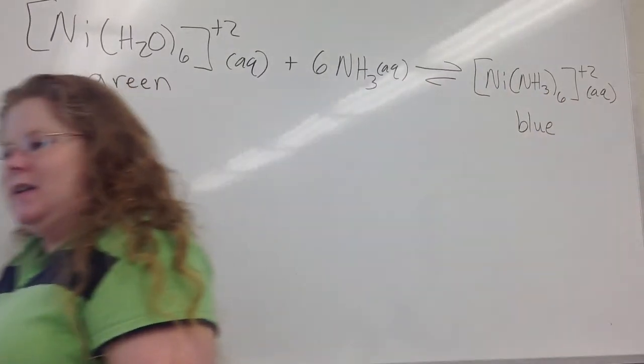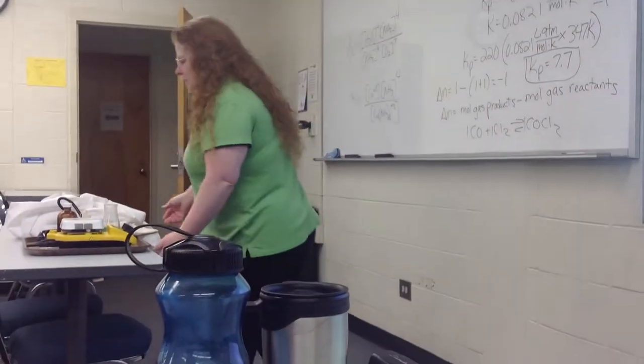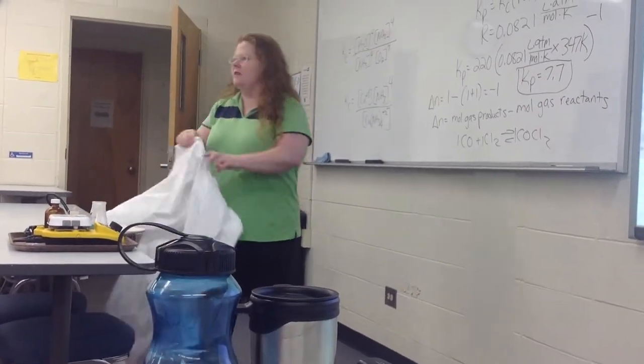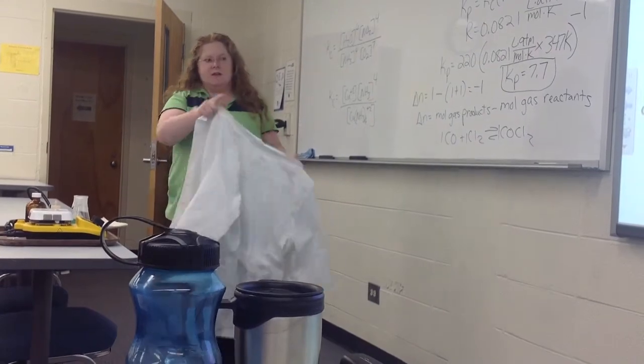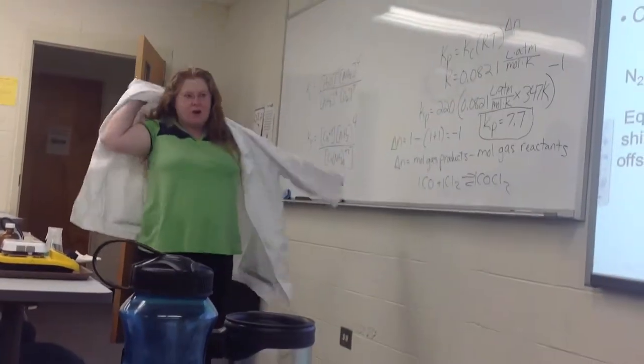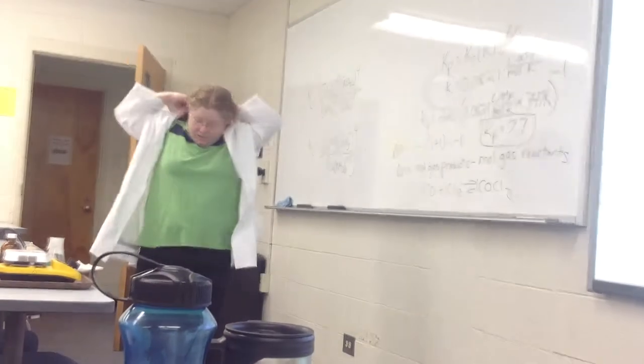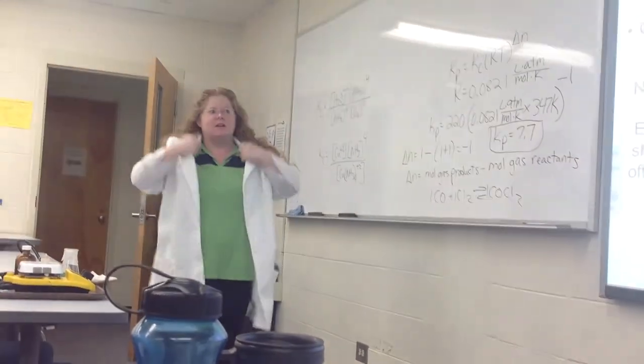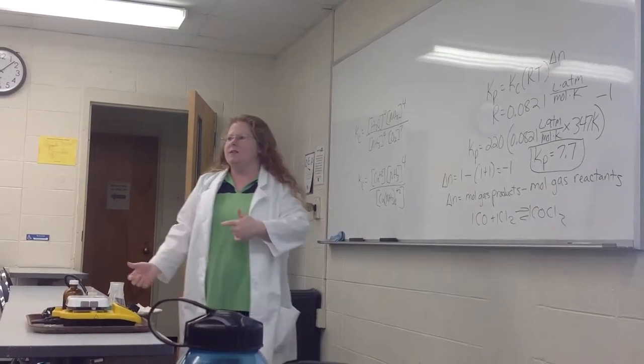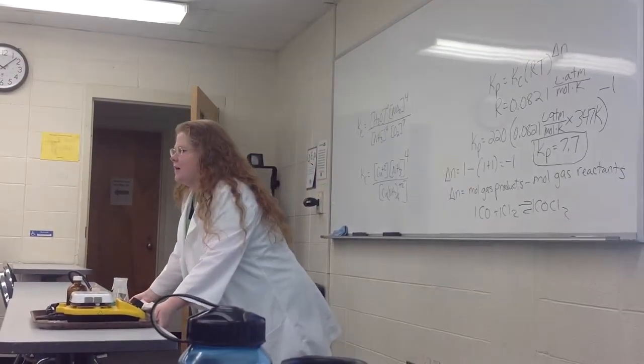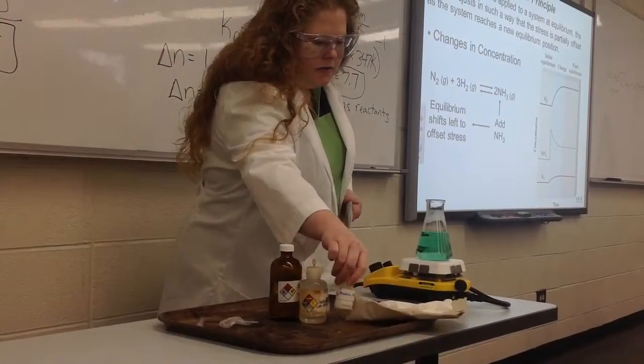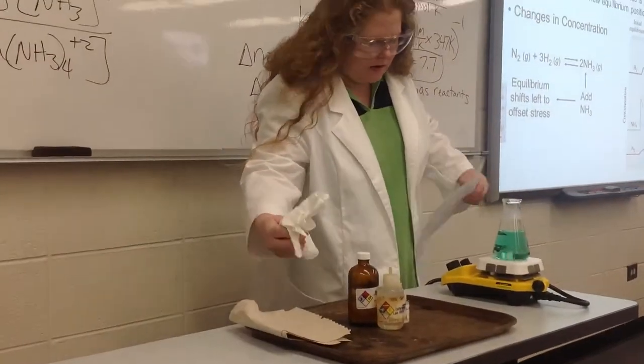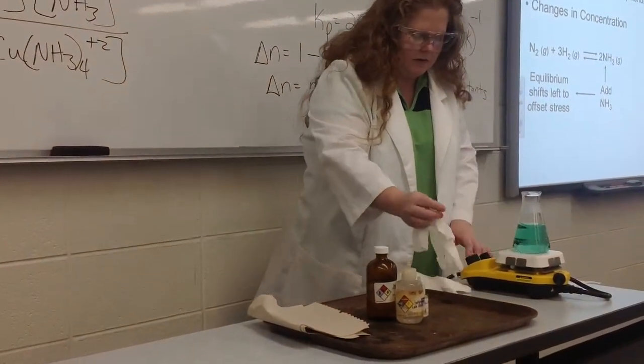By adding different reagents, we can cause this equilibrium to shift left or right in the direction of either the reactants or the products. If done correctly, we should be able to see color changes from green to blue and even back again. Now I'm going to add some ammonia to this.